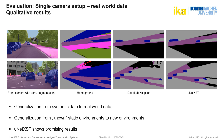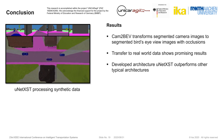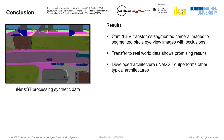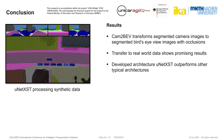Here we see two examples of qualitative results for the real-world application using only a single front-facing camera. Remember that our neural networks were only trained on synthetic data. The images show that the networks successfully generalize to real-world data and to new environments, since the depicted environment was not modeled in our simulation. Our proposed network UNET XST shows promising results. The video on the left shows how UNET XST transforms four synthetic segmented images to the desired BEV image with occlusions, and the network successfully learned this task.